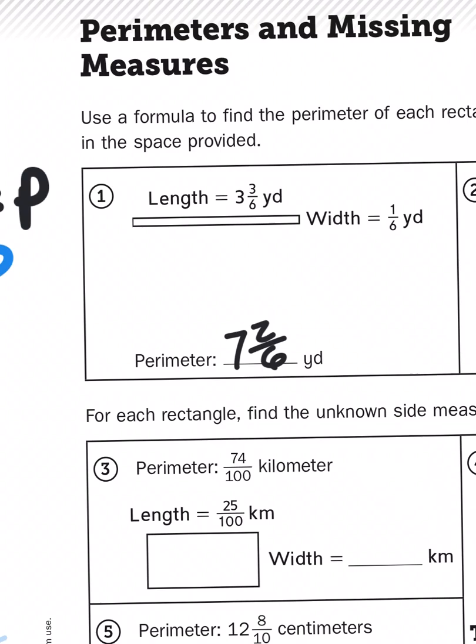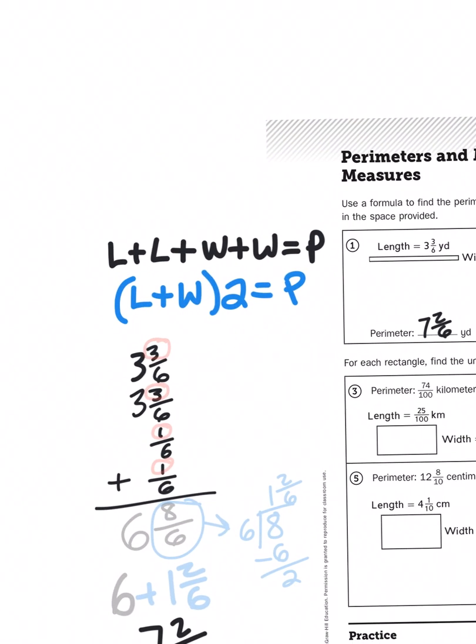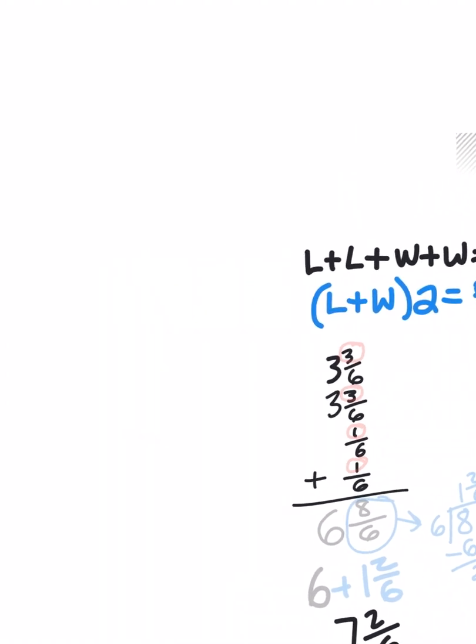The perimeter is 7 and 2 sixths of a yard. Now later on in your career, maybe in 5th grade, you might be asked to put that in the lowest common denominator. 2 sixths would be represented as 1 third, but we're not there yet. So let's take a look at that problem again, but this time we're going to use multiplication. Length plus width times 2.